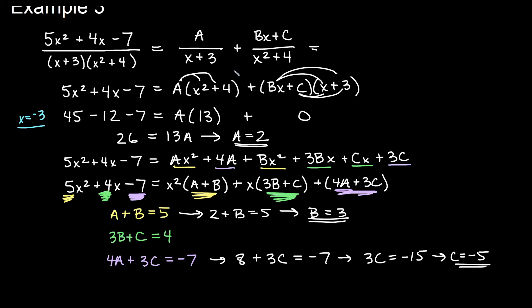Okay, so A goes over x plus 3 and A was 2. So this is 2 over x plus 3 plus we have B was 3 so that'll be a 3x on top and then C was negative 5 so it's 3x minus 5 on top and that is over x squared plus 4.